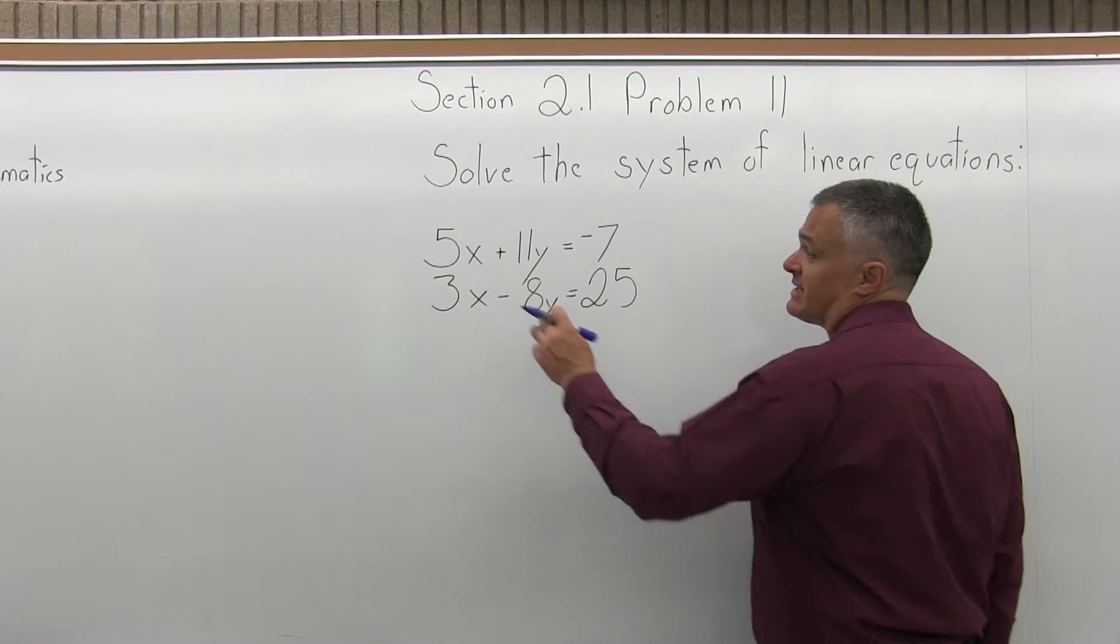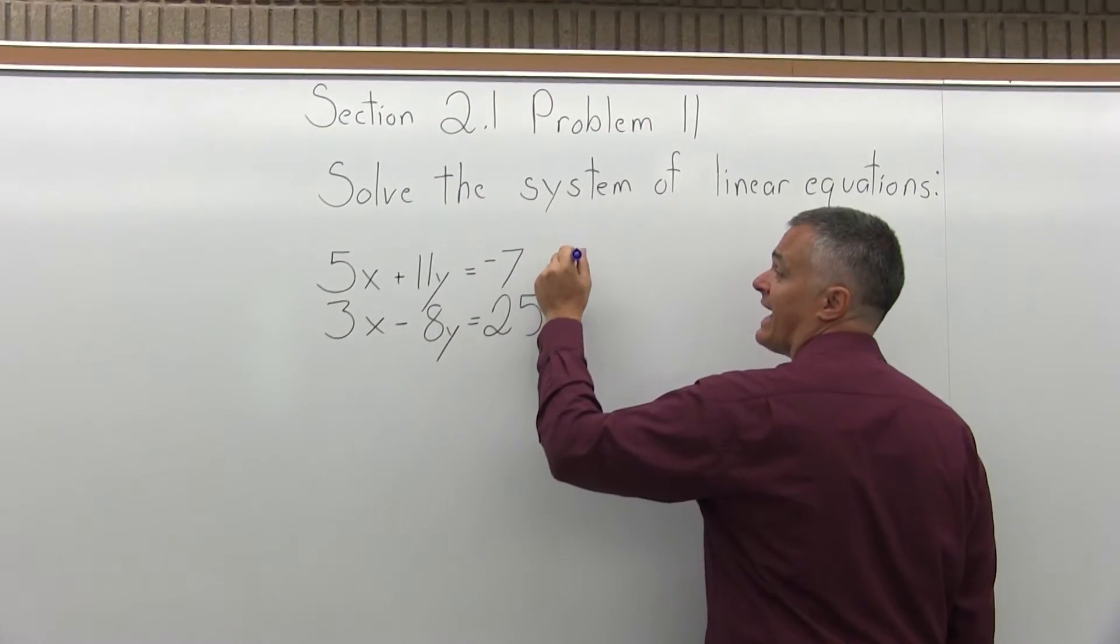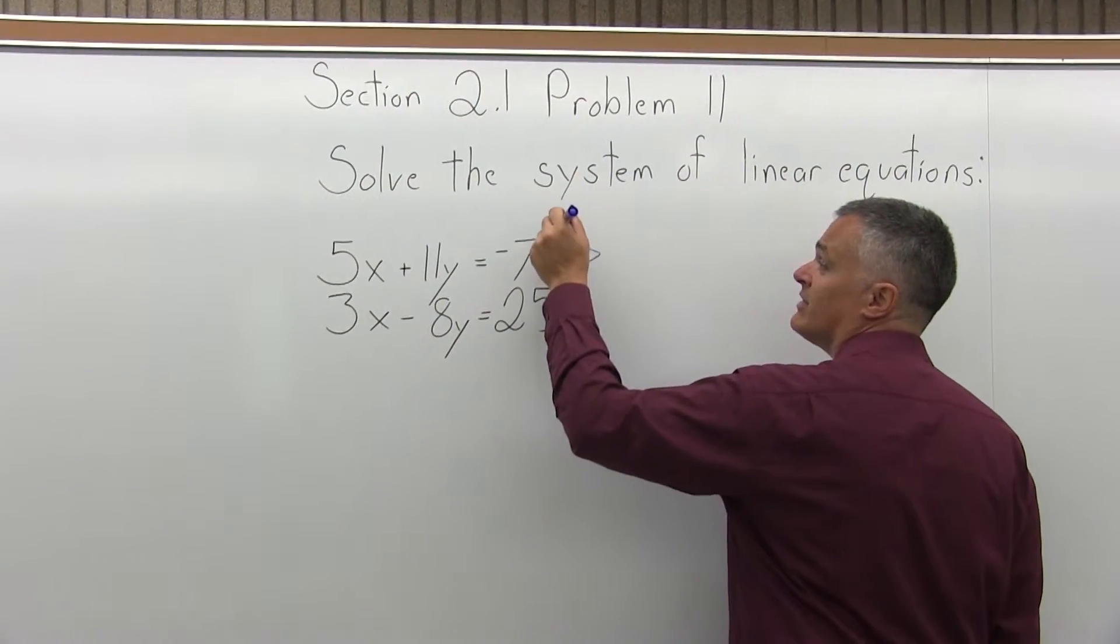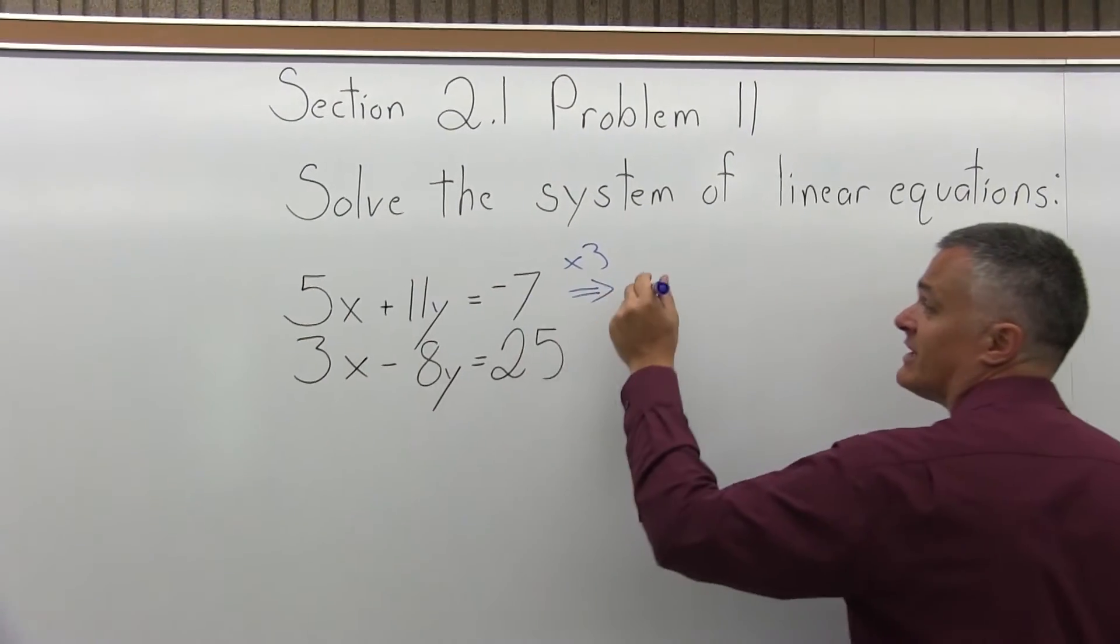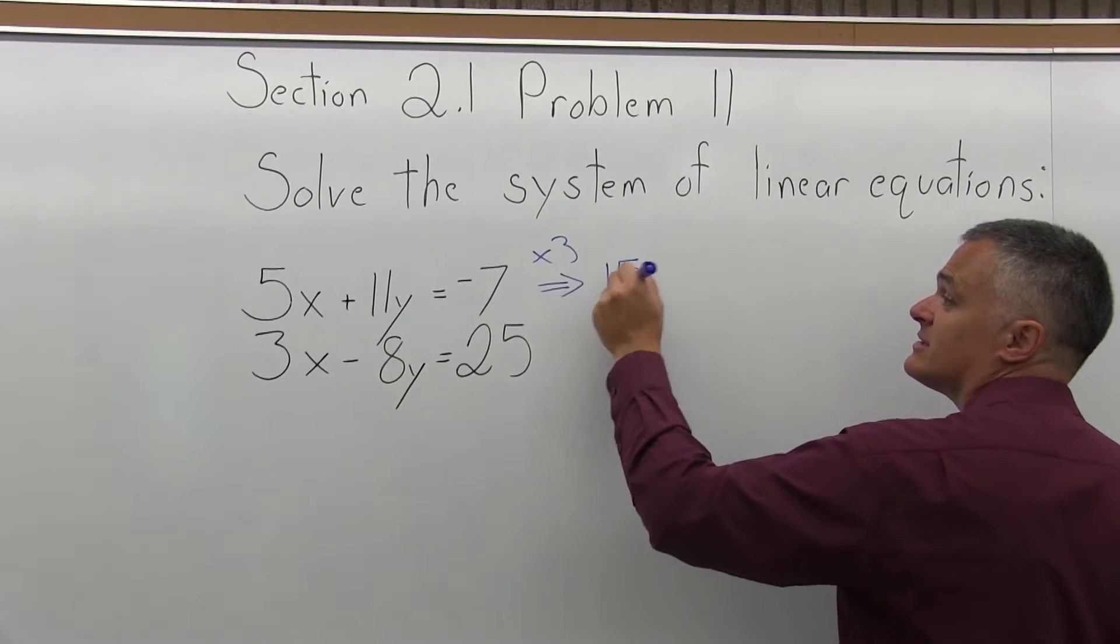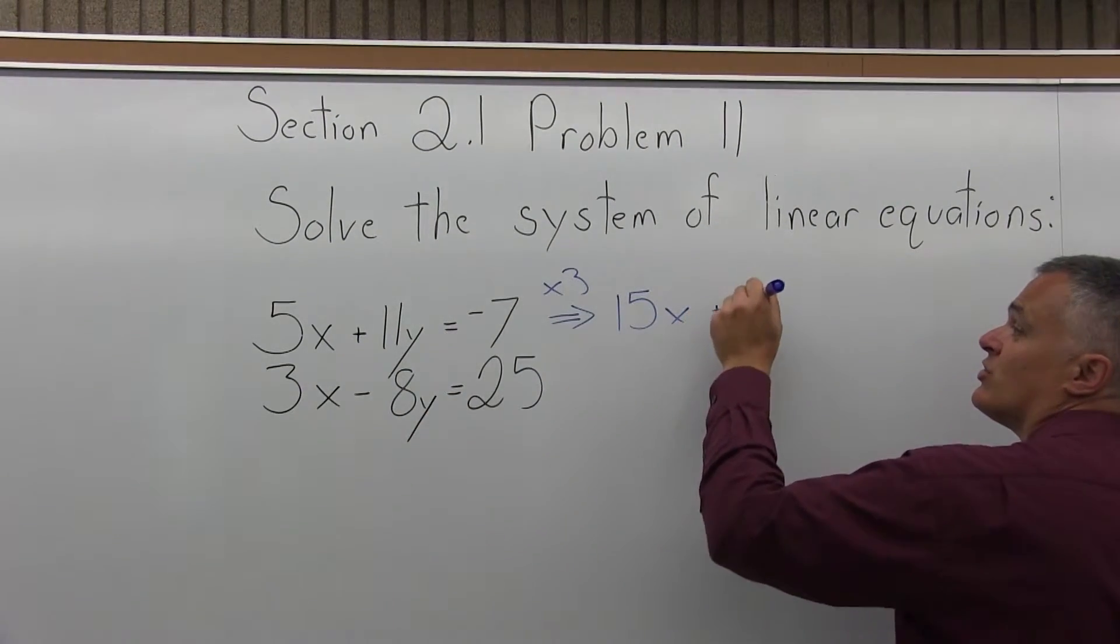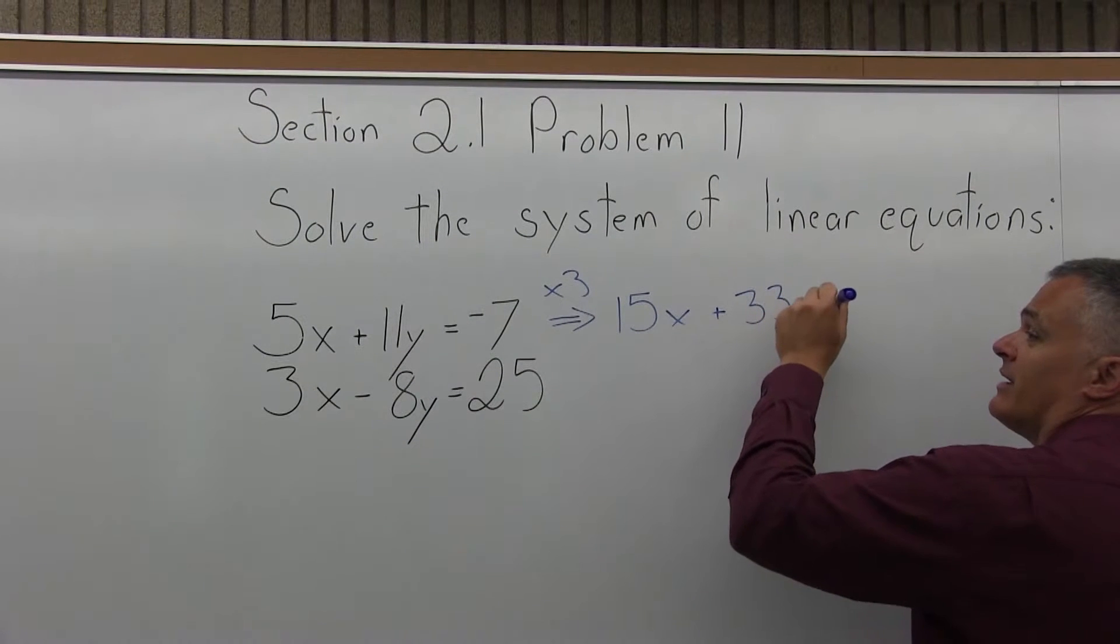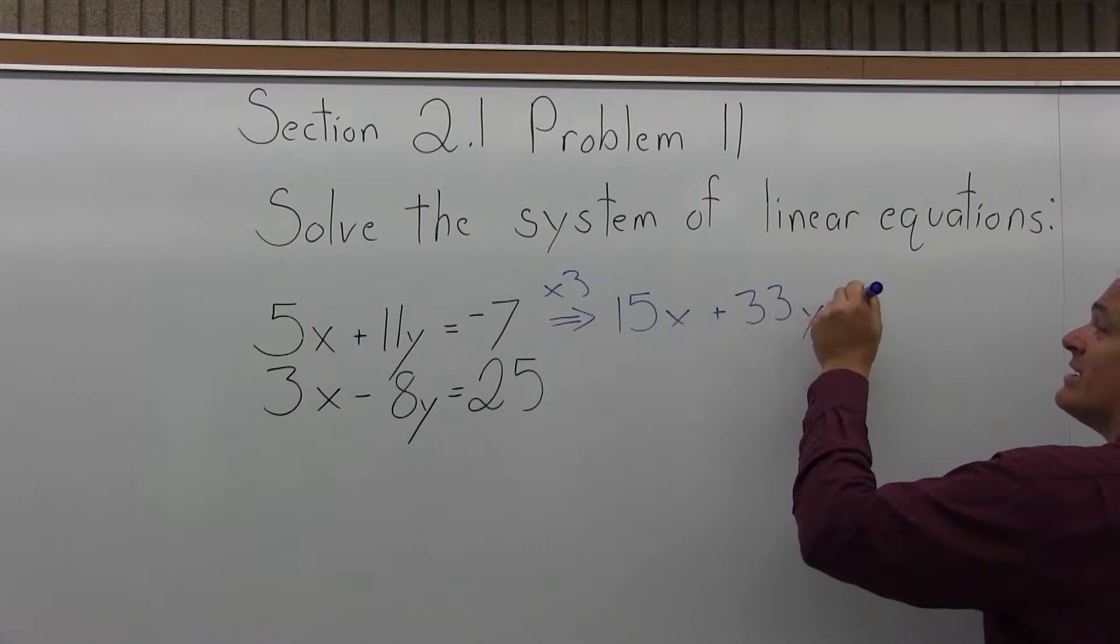So to cancel the x's, I want this 5x to turn into a 15x. So if I do everything times 3, that'll make a 15x. 3 times 5x is 15x. 3 times 11y is 33y. And don't forget, 3 times negative 7 is negative 21.